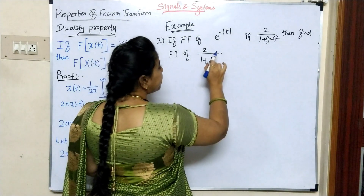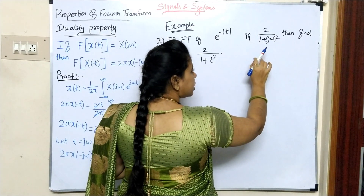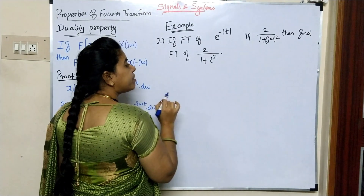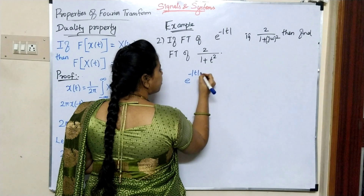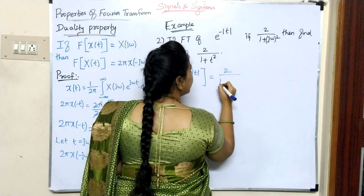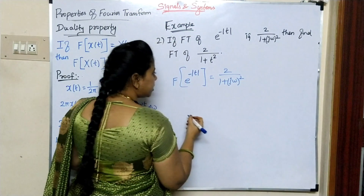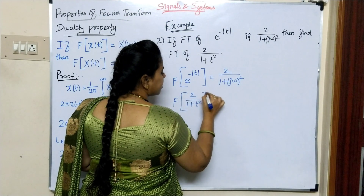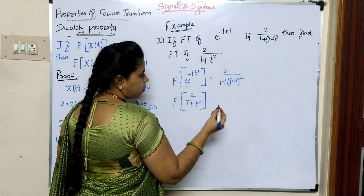Next problem: if Fourier transform of e to the power minus modulus of T is 2 divided by 1 plus j omega squared, then find the Fourier transform of 2 divided by 1 plus t squared. Here e to the power minus modulus of T is the signal, and its Fourier transform is 2 divided by 1 plus j omega squared. So this is very easy.